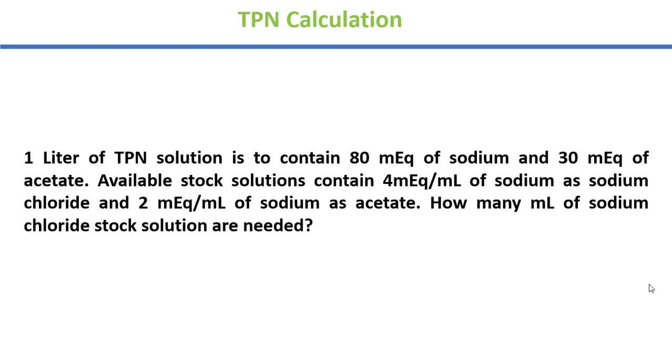A question is which is what we have in this video. One liter of TPN solution is to contain 80 milliequivalents of sodium and 30 milliequivalents of acetate. Available stock solutions contain 4 milliequivalents per mL of sodium as sodium chloride and 2 milliequivalents per mL of sodium as acetate. How many mL of sodium chloride stock solutions are needed?